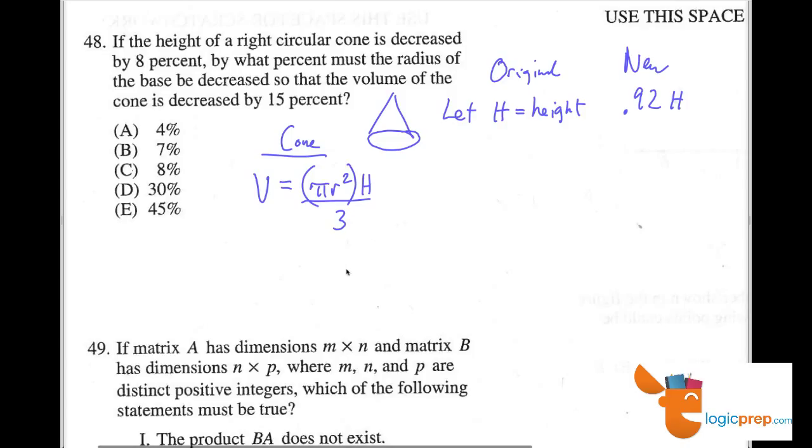I always like to write divided by 3 when I'm showing this equation. So we want to know how the radius changes when the volume decreases by 15%. So here's our original. We're going to say that r is the original here as well. That's the radius. And so in our original, this is the volume, pi r squared h over 3.